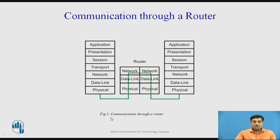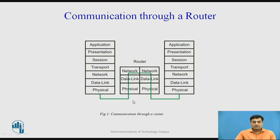In figure 1, you can see the communication of a data packet through a router. It is clear that the router works in three layers: the network layer, the data link layer, and the physical layer — the bottom three layers of the OSI model.